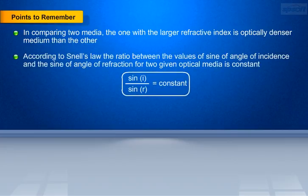According to Snell's law, the ratio between the values of sine of angle of incidence and the sine of angle of refraction for two given optical media is constant. That is, sine of i divided by sine of r is a constant.